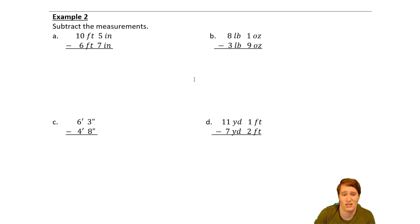So on a here, I'm actually, I'm going to go ahead and borrow. I'm going to say, I can't take seven inches away from five inches. So I'm going to take one of these feet and add one foot, one foot's worth of inches to this five. So 12 plus five is 17. So 17 minus seven is 10. And then nine minus six is three. So that's three feet, 10 inches. Okay, so that's one way to do it.